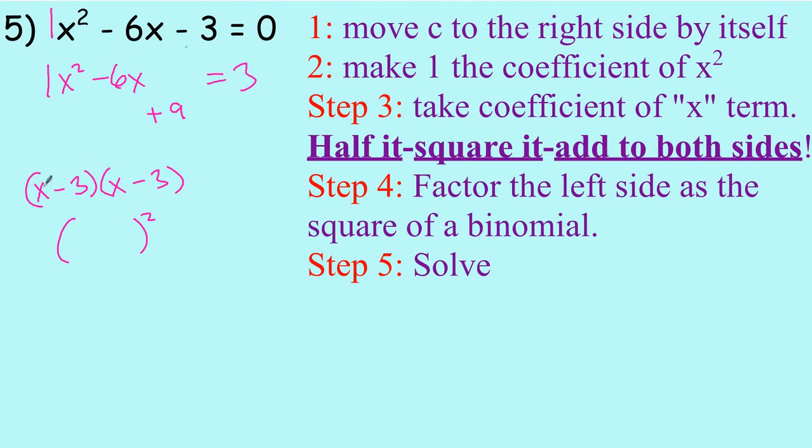Because think about it. If we were to foil this x minus 3 out, that's x squared minus 6x plus 9. But we only have x squared minus 6x. So that's why we have to add 9 to the left-hand side. So if we added 9 to the left side of the equation, well that means we have to add 9 to the right side. That's what we're trying to do here. We add 9, and we get 12, and this side is x minus 3. What did I just do? I took this number, I took half of it, which is negative 3, and I squared it, which is 9.